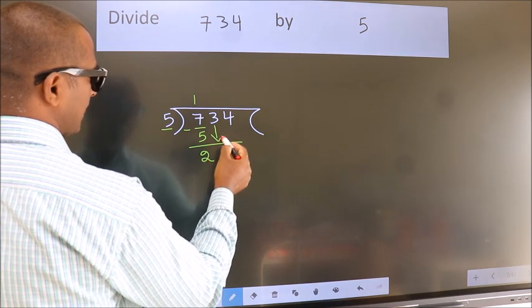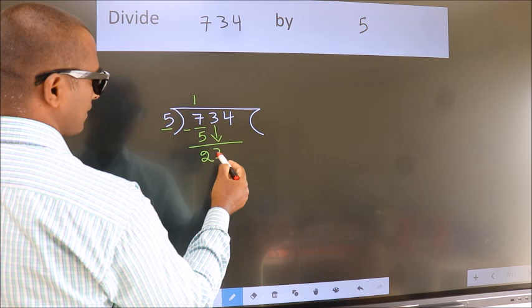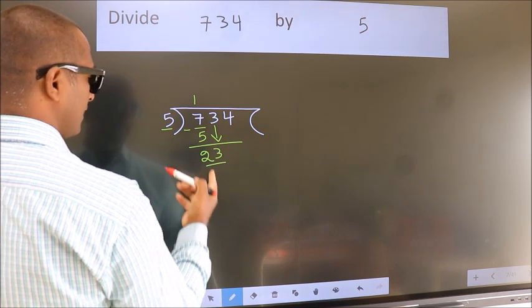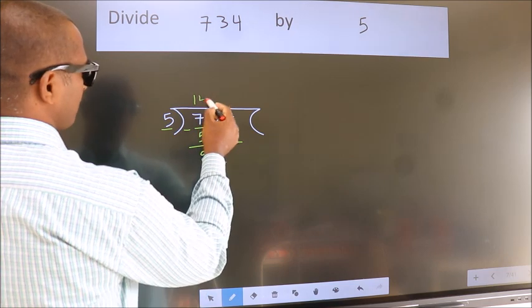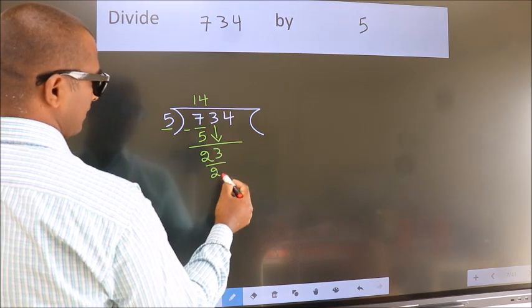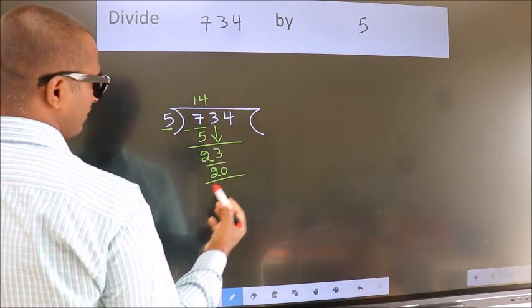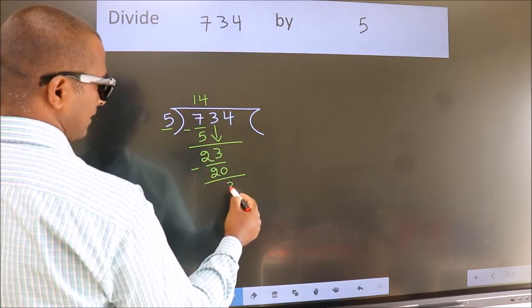bring down the beside number. So, 3 down. So, 23. A number close to 23 in the 5 table is 5 fours, 20. Now we subtract. We get 3.